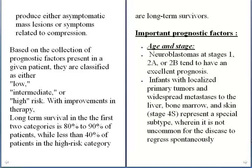Based on the collection of prognostic factors present in a given patient, they are classified as low, intermediate, or high-risk patients. Long-term survival in the low and intermediate risk categories is about 80 to 90 percent, while less than 40 percent of high-risk patients achieve long-term survival.